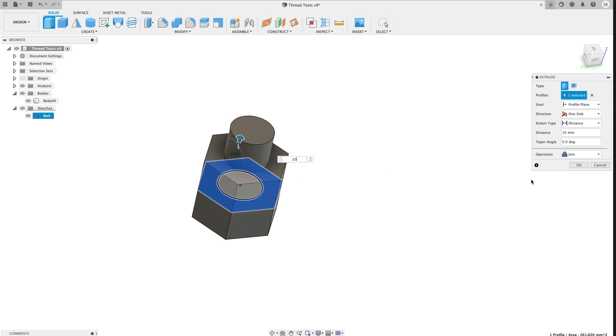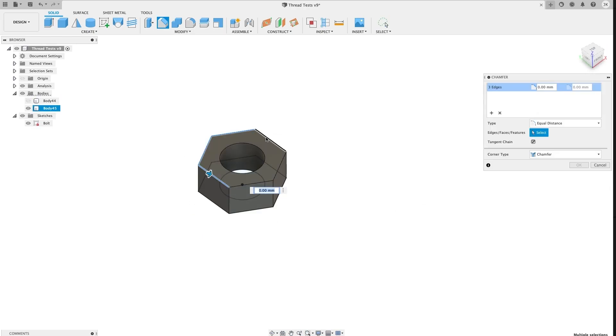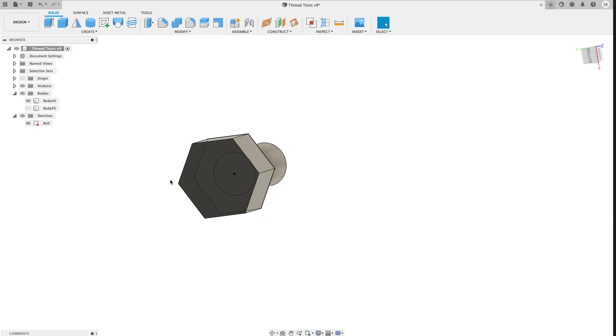First, we're going to create the basic forms for these threaded parts. For these demos, I'm just going to do a nut and a bolt. Don't add any clearance, that is to say space between the parts, just yet.